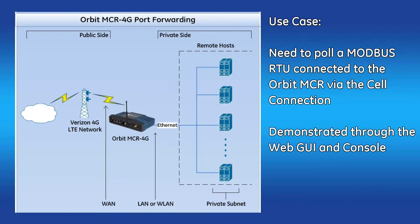An example need for port forwarding is such: your Orbit MCR4G has Modbus PLCs connected to it via the ethernet ports, and you need to get into its cell connection and poll these units. You need to be able to get from the public side to the private side, much like with your home router if you wanted to get into your router from outside. This is where port forwarding rules come into effect.